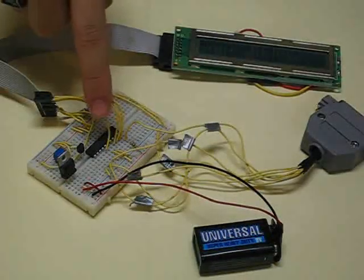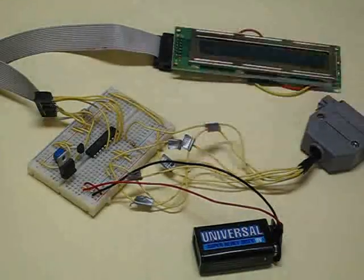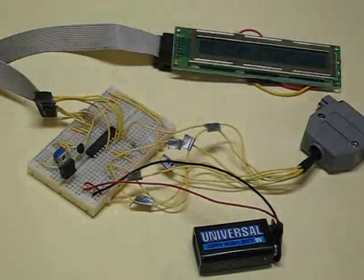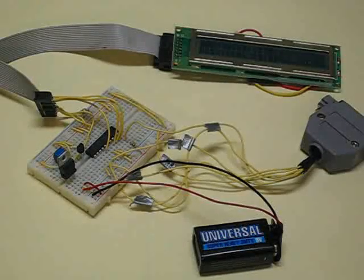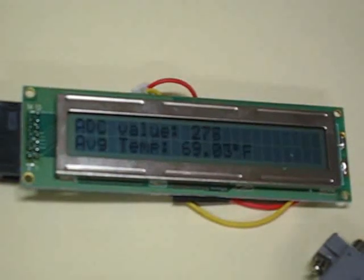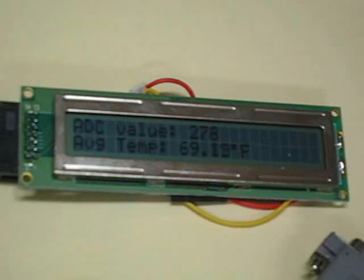You wired up the LCD, used the programming cable, and wrote code that reads an analog signal from the temperature sensor, converts it to a digital value, and continuously updates the LCD.